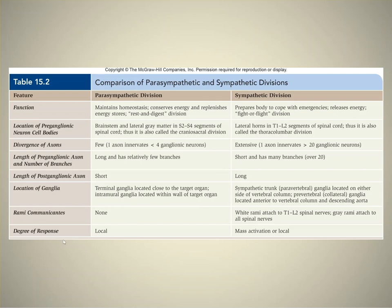One thing we haven't talked about yet is the degree of response. The parasympathetic system usually produces a local response, while the sympathetic could be local or a mass activation — that is, a body-wide activation.